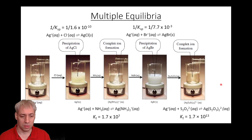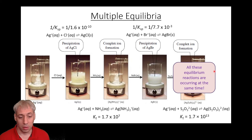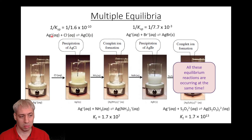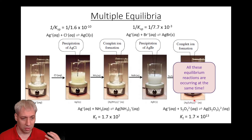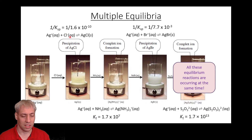The take-home here is that all these equilibrium reactions are happening at the same time. It's not like this one happens and then it's done — there's no more equilibrium between AgCl, Cl⁻, and Ag⁺. No, this equilibrium still exists. The amount of Ag⁺ that disappears here and goes to this complex affects the equilibrium over here. All these equilibria are happening simultaneously, with common ions between them, so what happens in one affects the others. They are not independent — they are all interacting.